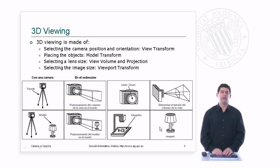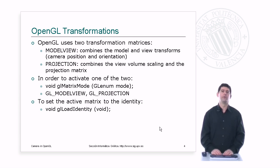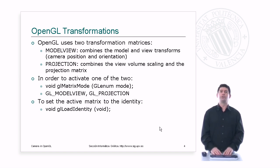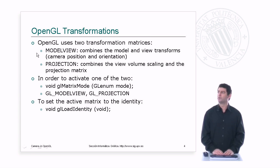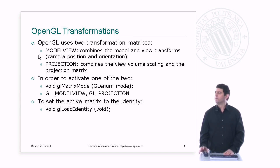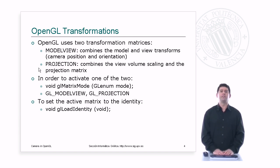These parameters are configured using different transformations: the view transform for camera position and orientation, the model transform for setting up the model, the projection for the view volume, and the viewport transform to select the location and size of the output image. OpenGL uses two transformation matrices: the model view matrix, which combines model and view transforms for camera and object position and orientation, and the projection matrix, which combines view volume scaling and projection.